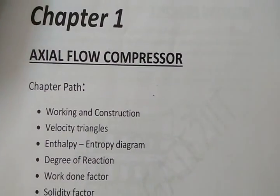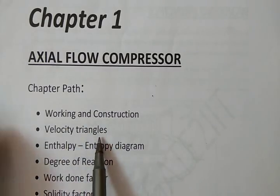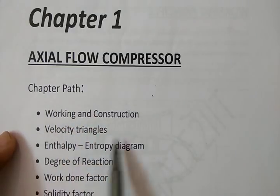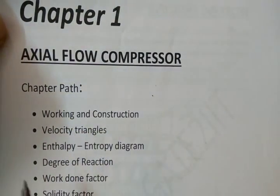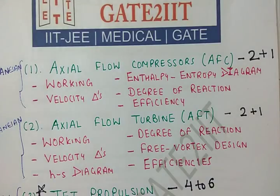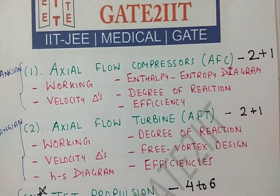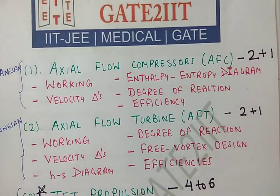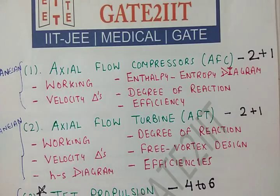In the next lecture, we'll focus directly on axial flow compressors — working, construction, and velocity triangles. This is the most technical part, and if you understand this, the axial flow turbine velocity triangles will also become clear. Stay tuned for the next lecture, please like and subscribe, and feel free to give feedback. You can reach us at info@goodwillgate2iit.com or visit www.goodwillgate2iit.com.